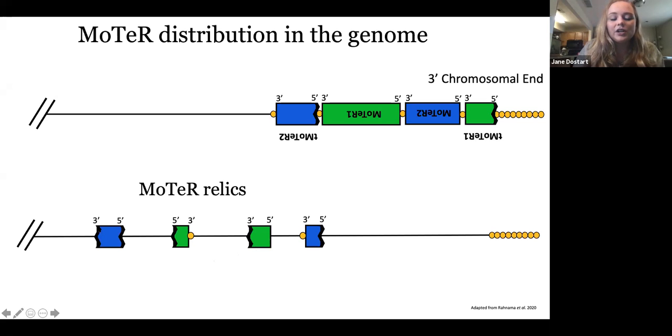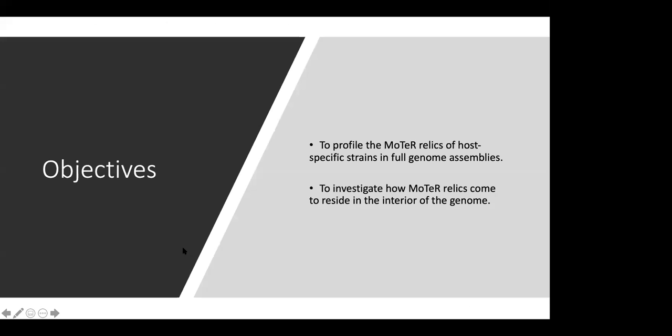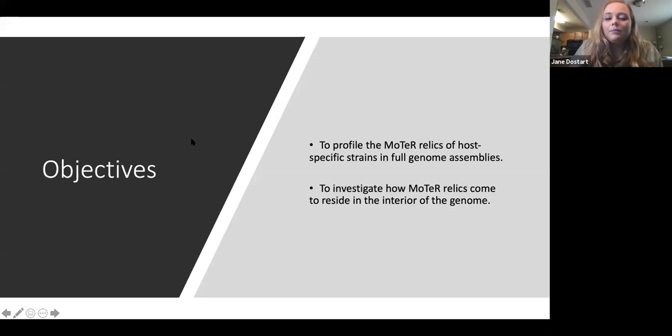And you can see some variation here with some that are truncated both in the 3' and 5' regions, just the 3' or just the 5'. My work specifically looks at those MoTeR relics that have this maintained 3' region, as well as a telomere repeat that denote their origin in the telomere. The objective of my study, or for this current objective, was to profile the MoTeR relics of host-specific strains and full genome assemblies, and to investigate how MoTeR relics come to reside in the interior of the genome.